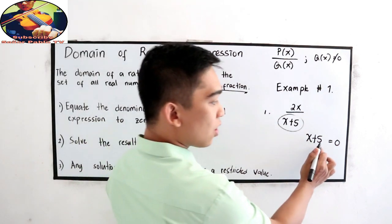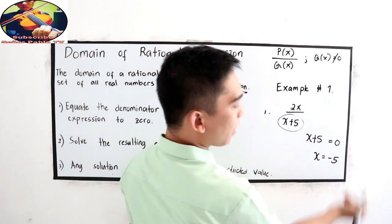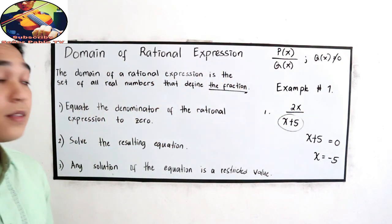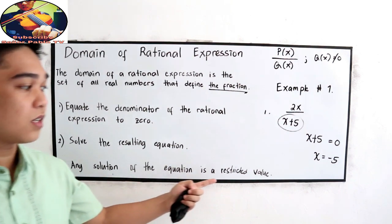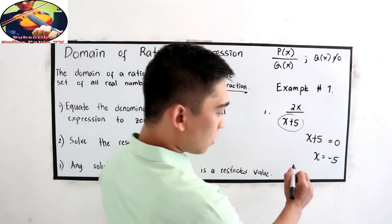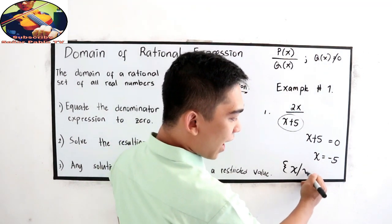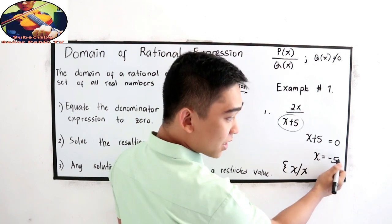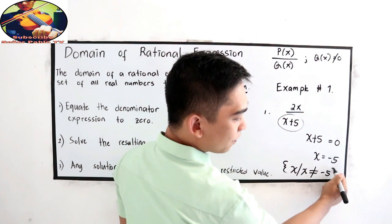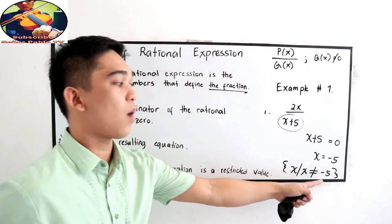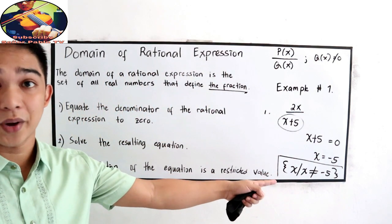We transpose 5, so X is equal to negative 5. The last step: any solution of the equation is the restricted value. So our domain is the set of X such that X must not be equal to negative 5. This is the domain of the rational expression.